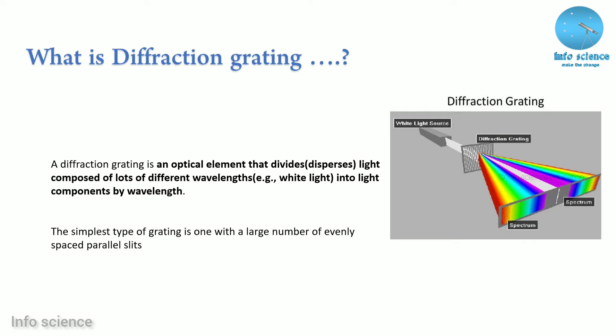A diffraction grating is an optical element that divides light composed of lots of different wavelengths into light composed by individual wavelengths. The simplest type of grating is one with a large number of evenly spaced parallel slits — this is a normal grating.